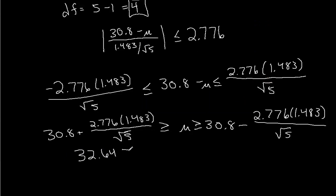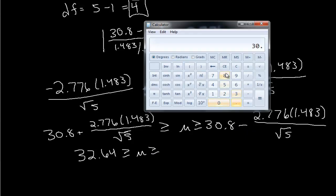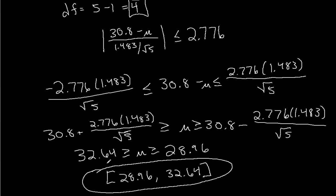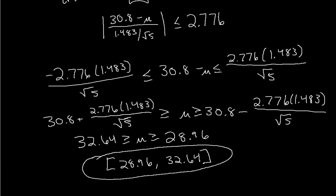32.64 less than or equal to mu, less than or equal to... We're going to do the same thing except for we put a minus sign in there. And again, I don't know of how to get this Windows calculator to be able to bring up what I previously entered. The lower bound is 28.96. So there's our confidence interval. About 28.96 to 32.64.